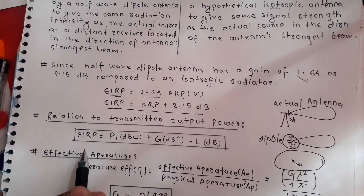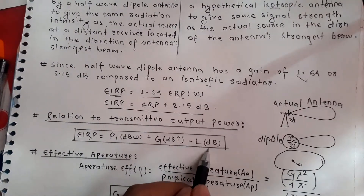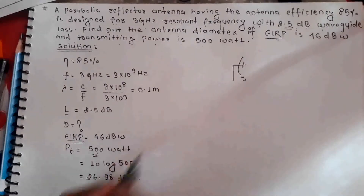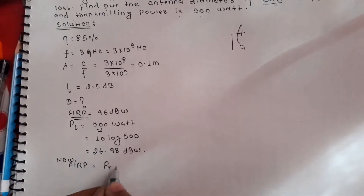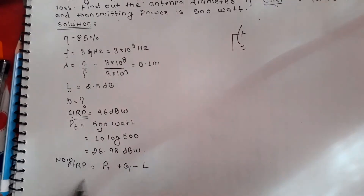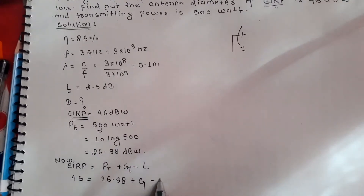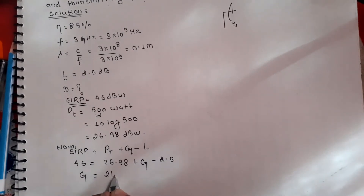The relation between EIRP and transmitter output power is: EIRP = P_transmitted + G_antenna − Losses. Substituting: 46 = 26.98 + G − 2.5. Solving, the gain of the antenna is 21.52 dB.